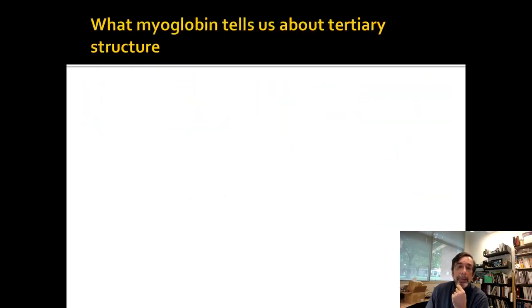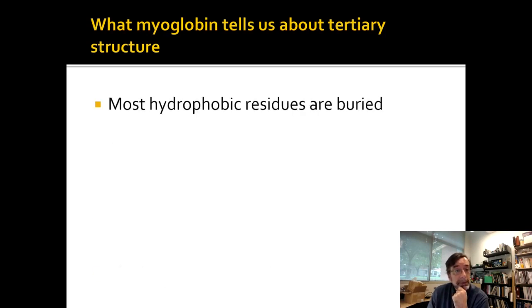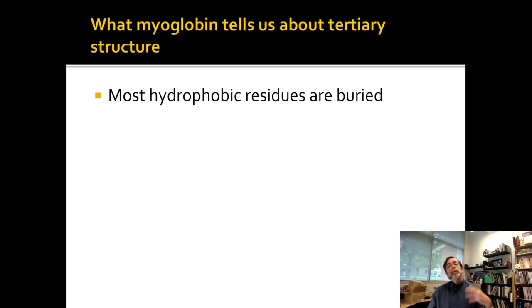So myoglobin was one of the first proteins to be solved, and it really tells us about tertiary structure. We actually will talk about its function when we get to the next chapter, but that's after the test. What did we know when we just got the crystal structure of myoglobin? Well, right there we showed you most hydrophobic residues, yellow ones, are buried.